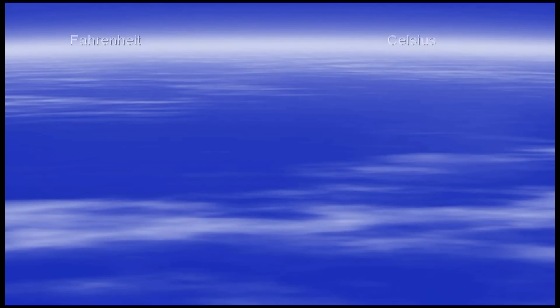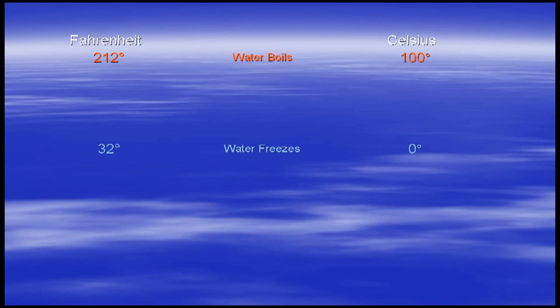There are two common temperature scales in use in the world: Celsius and Fahrenheit. Only the US and Belize use the Fahrenheit scale. The Celsius scale has the advantage that there are 100 — or 10 squared — degrees between freezing and boiling water at standard pressure. Powers of 10 make things much easier. Most of you know the formula that relates these two temperature scales, but with your teacher, use the data given on the screen to derive the formula, and also determine at what temperature the two have the same numerical value.